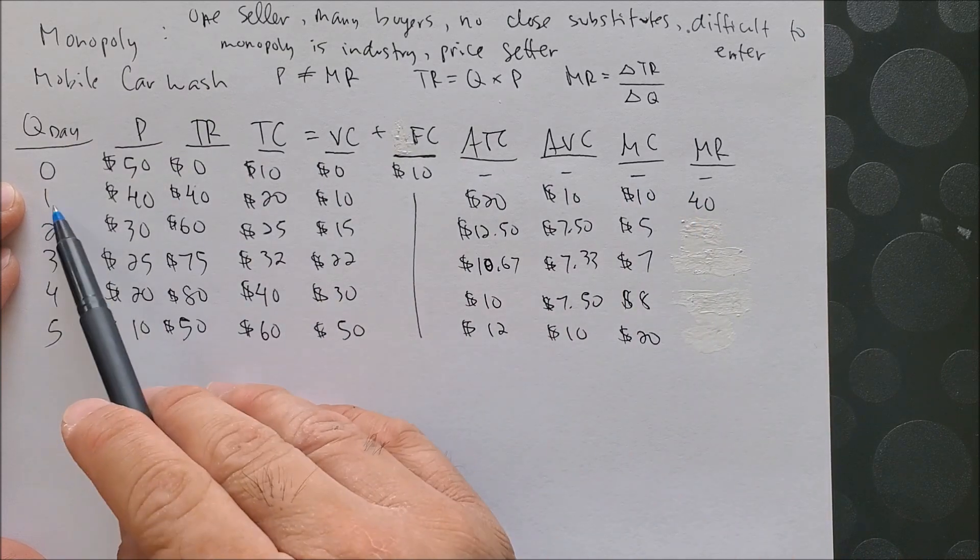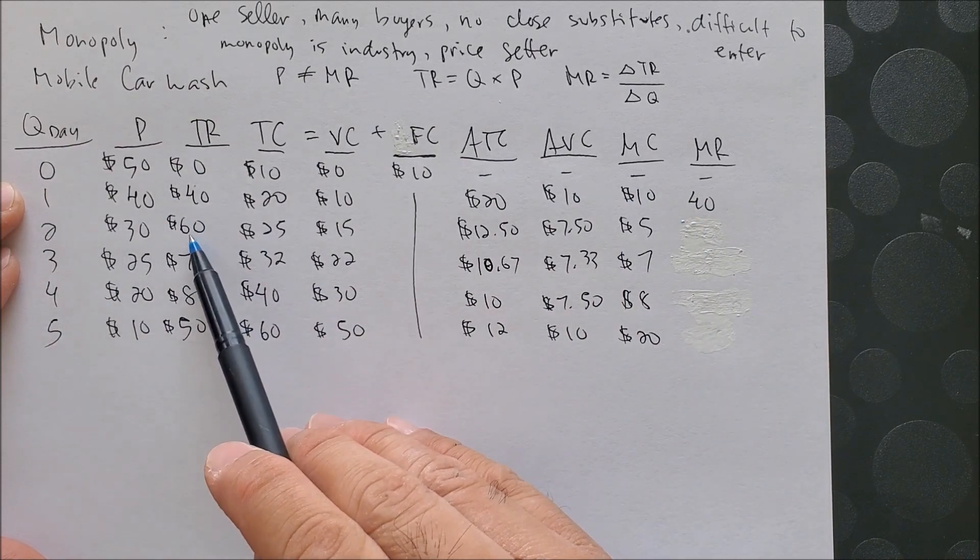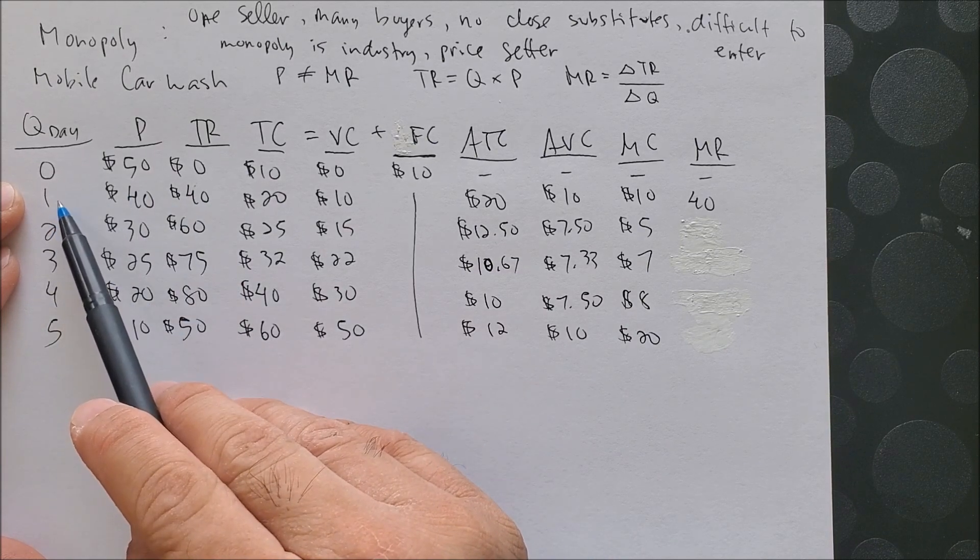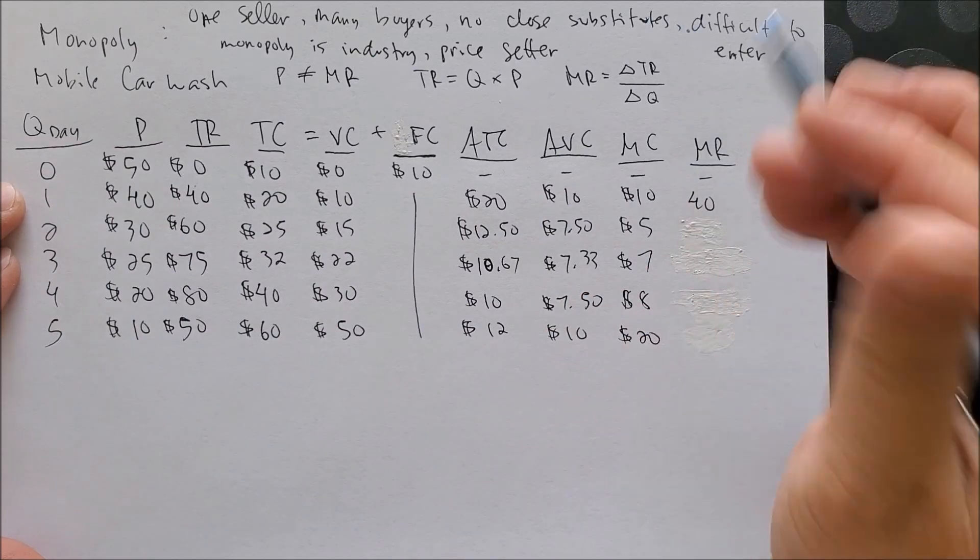Now we have from 1 to 2, another change. 60 minus 40, that's 20, over 2 minus 1, that's 1, which gives us 20.